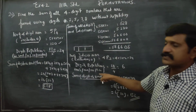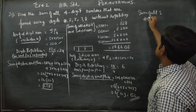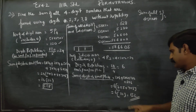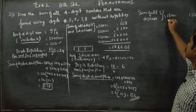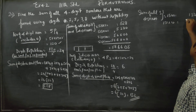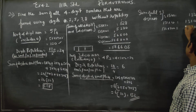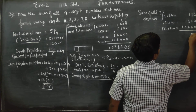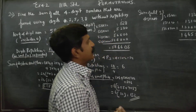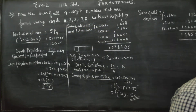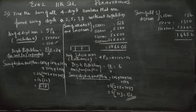Sum of all three-digit numbers: unit place 132 into 1 equals 132; next 132 into 10 equals 1320; 132 into 100 equals 13200. Adding these: 132 plus 1320 plus 13200 equals 14652. So 14652 is the sum of all 3-digit numbers.